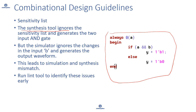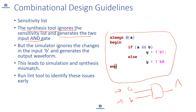The synthesis tool ignores the sensitivity list and will generate a two-input AND gate for the logic. Synthesis ignores it and creates a two-input AND gate, and in the netlist, whenever A or B changes, the output will change. But at RTL simulation level, if you've only given A in the sensitivity list, the output will only change when A changes. Synthesis ignores the sensitivity list and generates as per the logic, while simulation relies on it — this leads to simulation and synthesis mismatch.